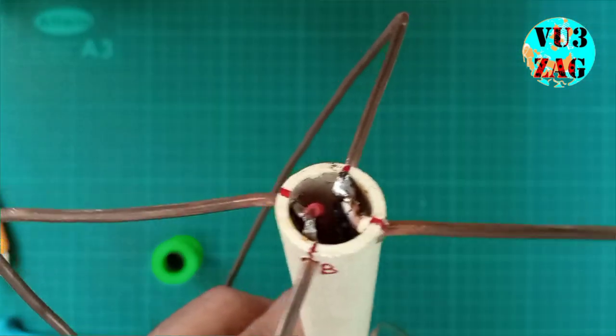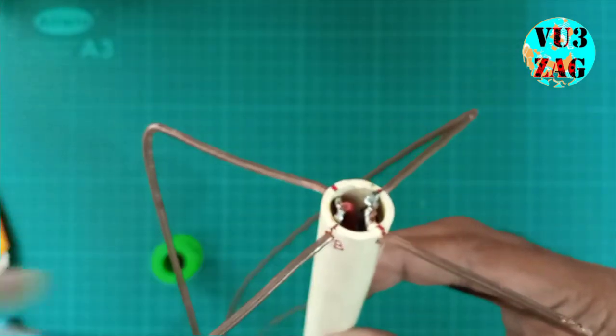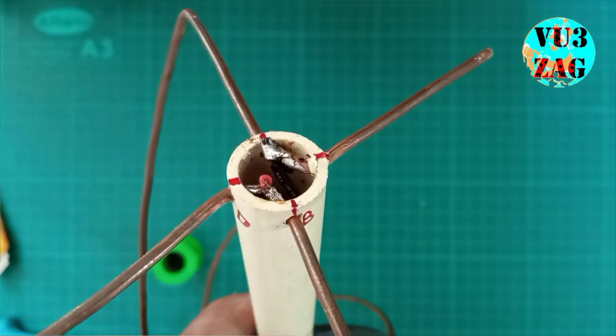I have soldered A and C junction with coaxial shield, and B and D junction with coaxial center conductor.